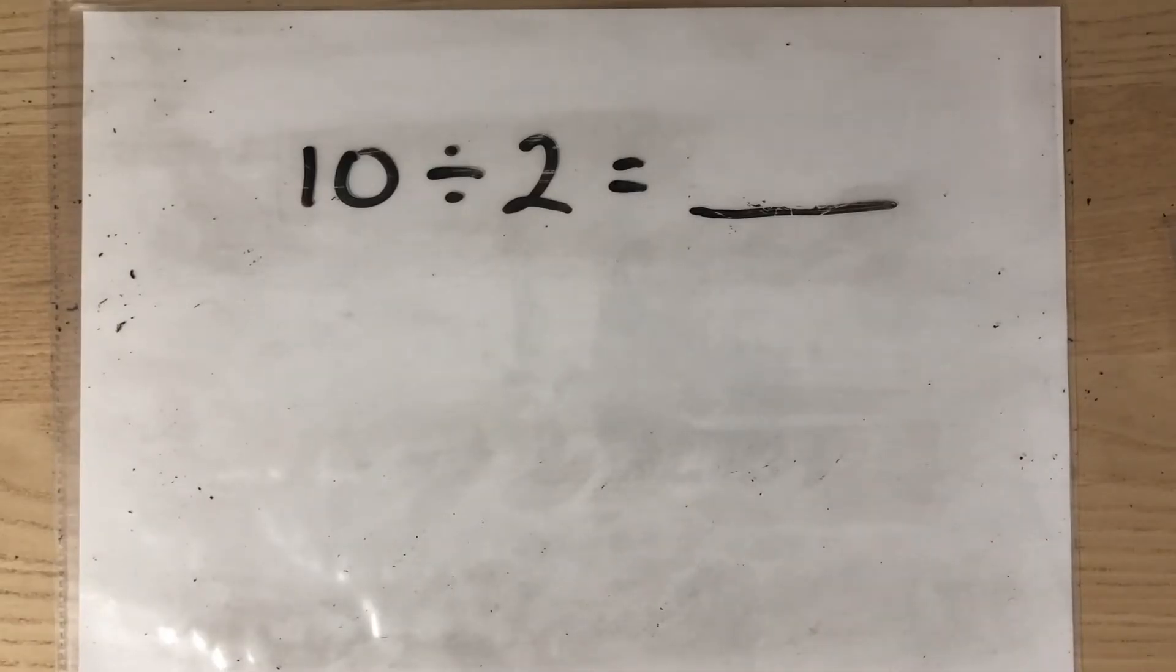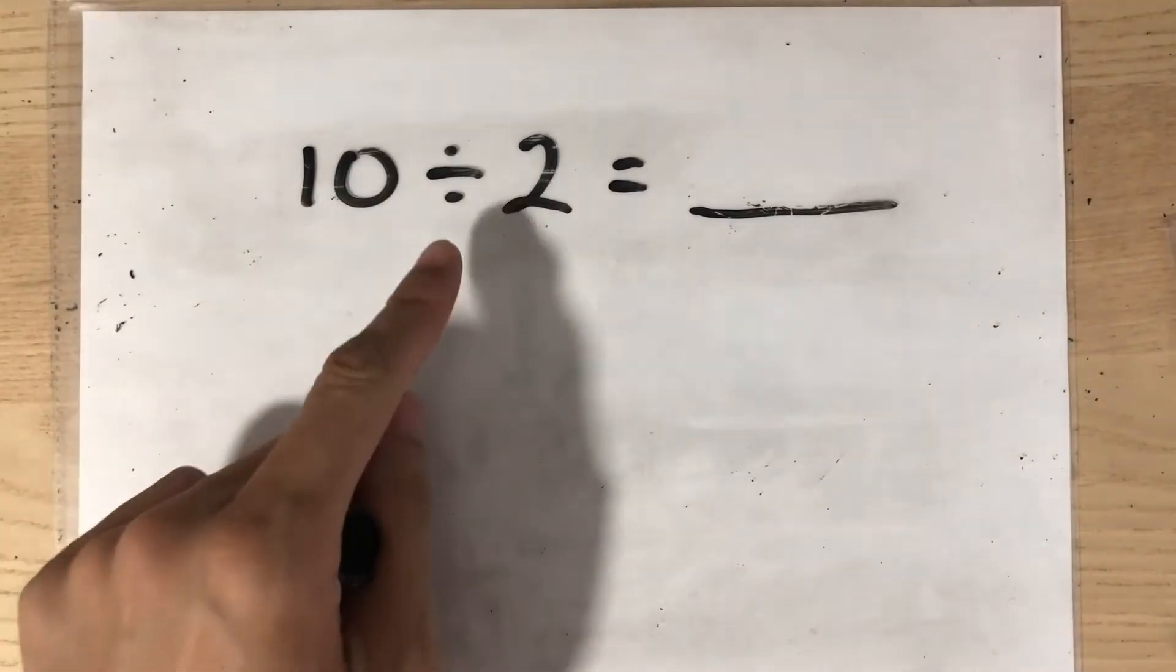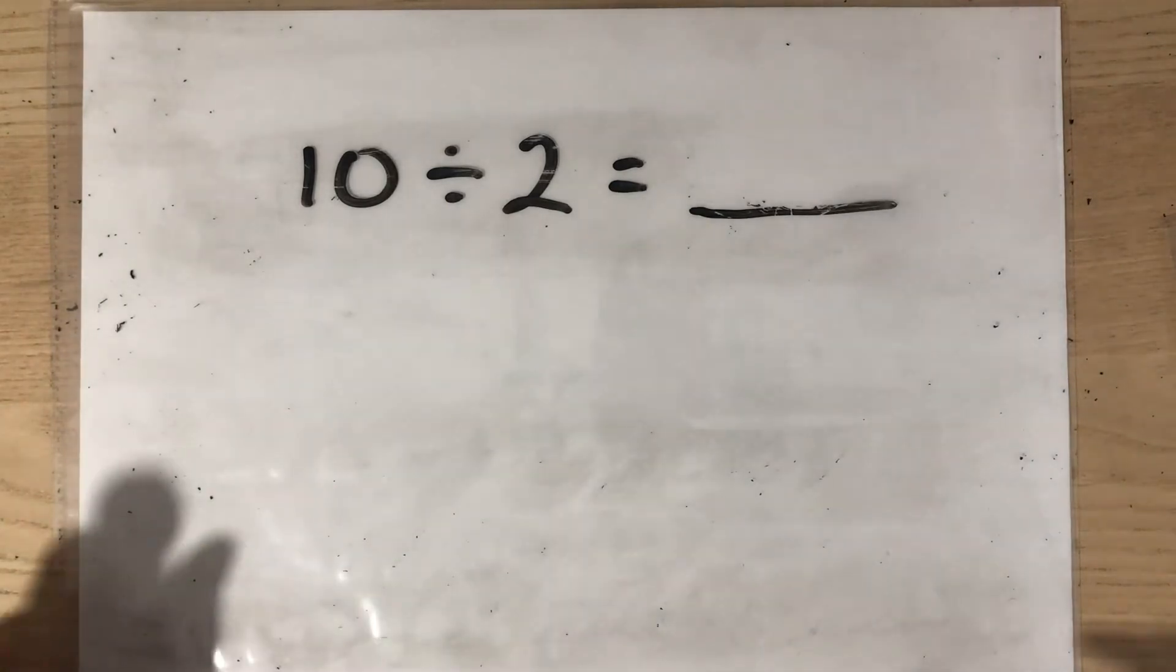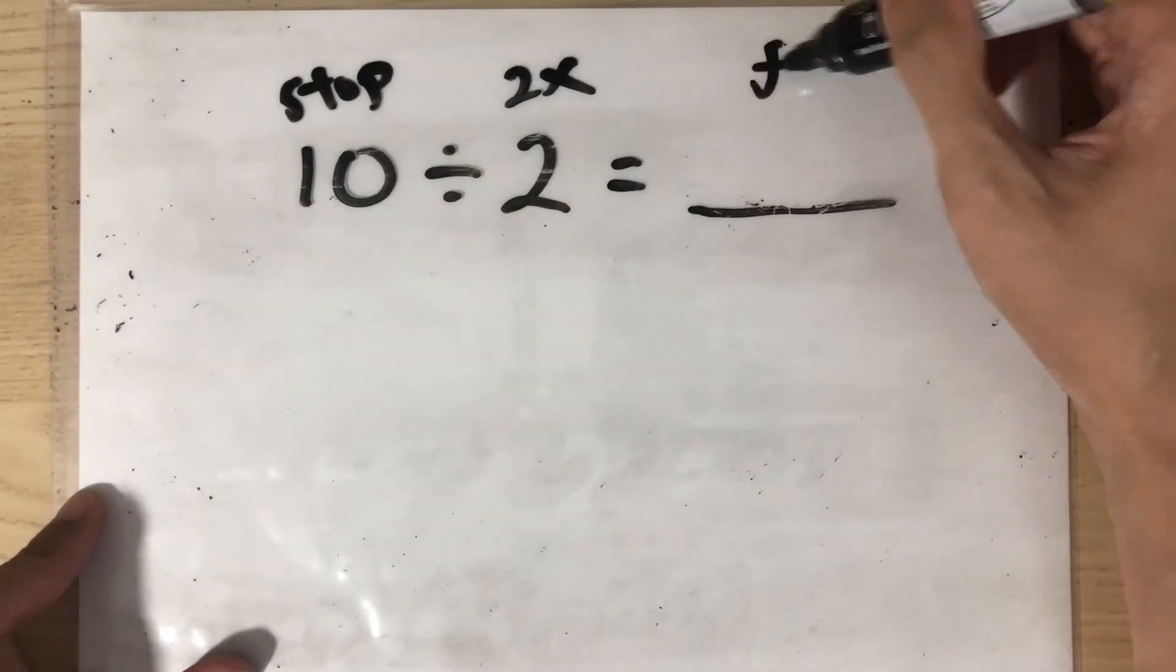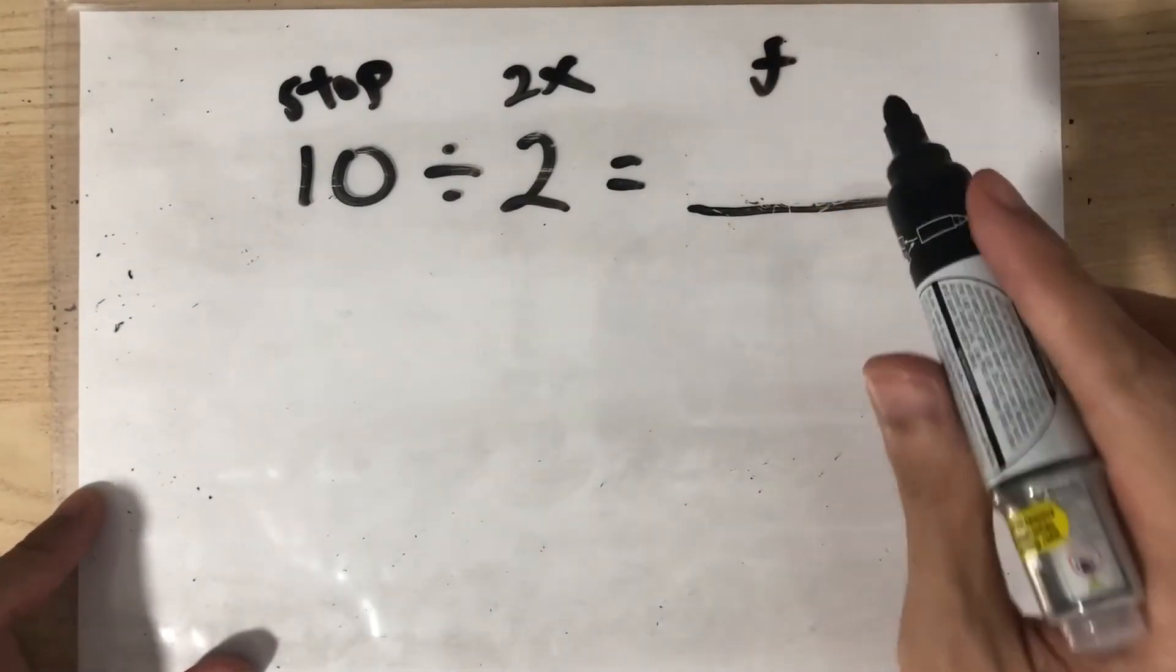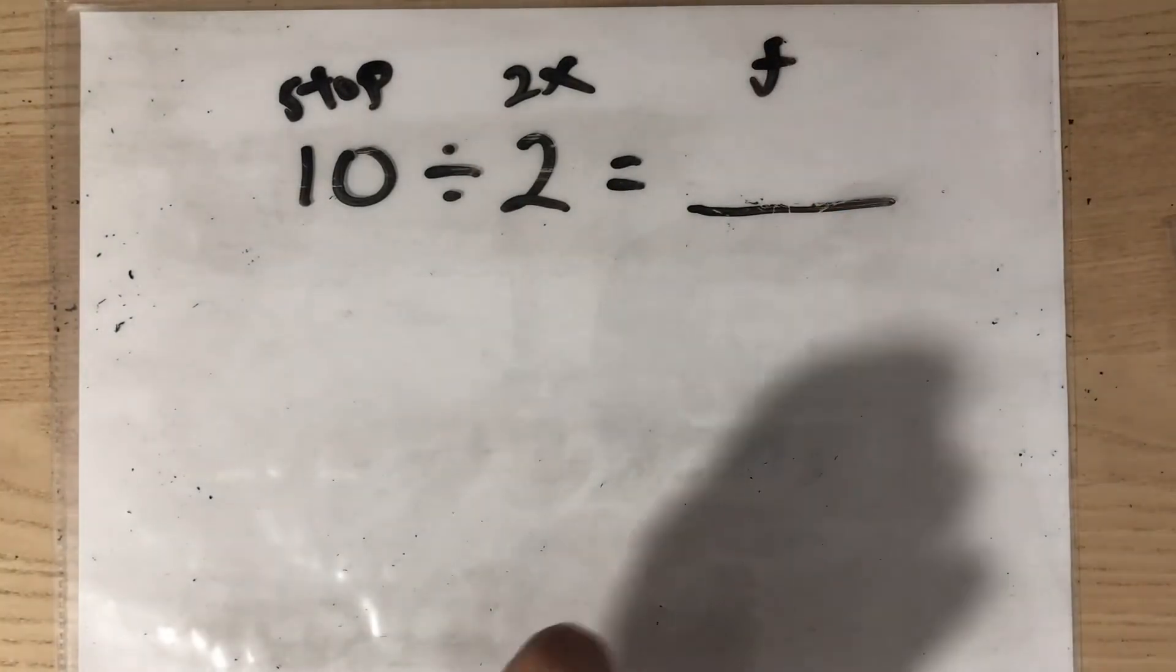Let's do a more difficult example now. What is 10 divided by 2? We'll do the 2 times table until we stop at 10. The answer will be the number of fingers we are holding up. So let's do that.